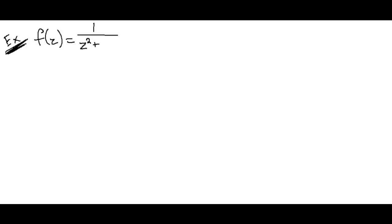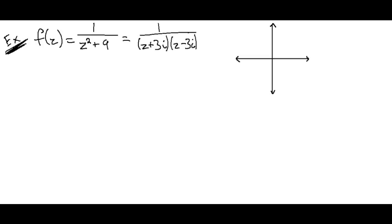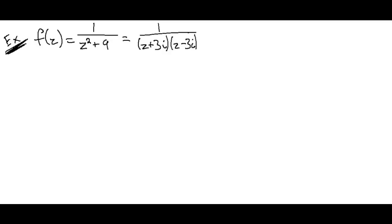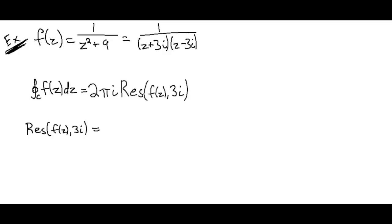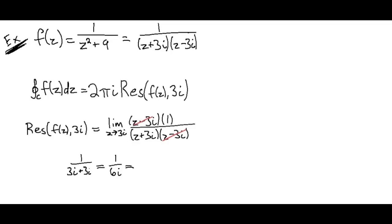Let's let our function be 1 / (z² + 9). This is the same as 1 / ((z + 3i)(z − 3i)). We're going to let our bounded region be just the pole at z = 3i. Since that is the only pole in our region, we only need to find one residue. So our integral is going to be equal to 2πi times the residue at z = 3i. We multiply our function by (z − 3i) and take the limit of what's left as z goes to 3i. We get 1 / 6i, or −i/6 if you rationalize. Multiply this result by 2πi, and we find that our integral is π/3.